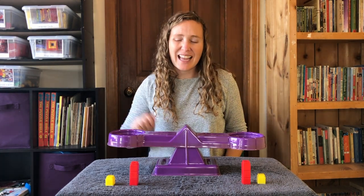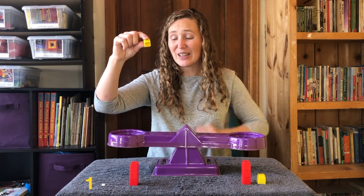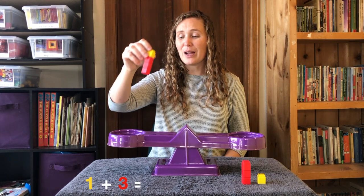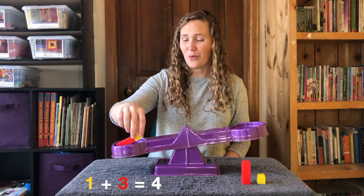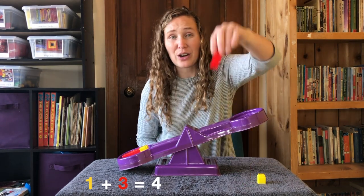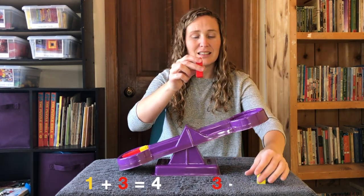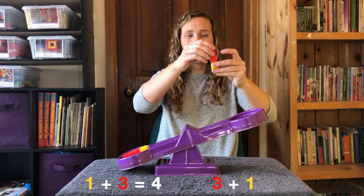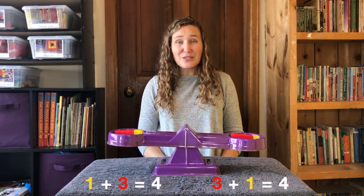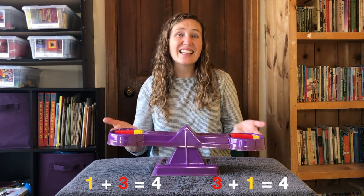Now we have one yellow and three reds. One yellow and three reds makes four. And on this side, we're going to start with our three reds and our one yellow. Three plus one is still four. Still equal.